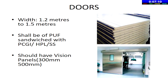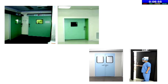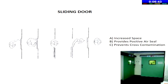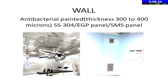Doors should be at least 1.2 meters wide for easy patient access. PUF sandwiched stainless steel panel or EGP panel doors are preferred. Doors should be fitted with vision panels to avoid unnecessary disturbances and staff movement. Sliding doors are preferred over double action leaf type or hinge swinging doors to save space and prevent air turbulence. Ideally doors should be electrically operated or hermetically sealed to control air pressure. Walls should be smooth, non-porous, non-reflective, easy to clean, and preferably stainless steel or EGP paneled.